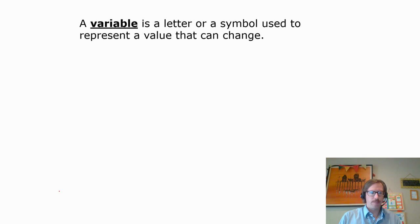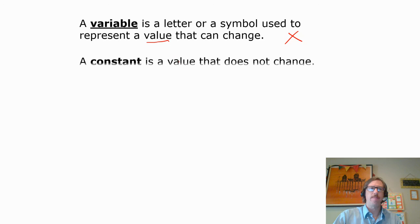So here we are. First off, a variable. A variable is a letter, a symbol used to represent a value that could be anything. It could change in the problem. That's why we call it variable. So x is our usual term for that. A constant is a value that does not change. So when we see plus 3 in a problem, that would be a constant.